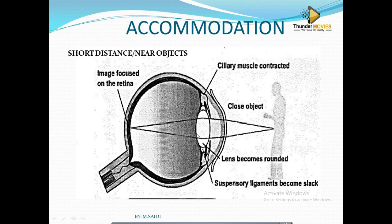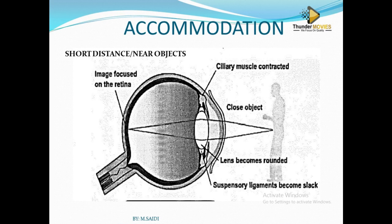Let's look at accommodation. What does it mean? Not the accommodation where you stay. Accommodation is the ability of the eye to see near and far objects — the ability of the eye to change the focal length to focus on near and far objects. We call it accommodation.